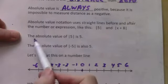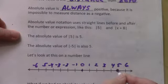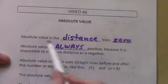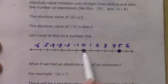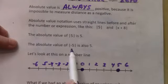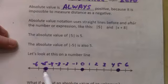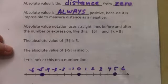Let's look at what this first one is telling us. What is the absolute value of 5? Well, let's find 5 on the number line. The absolute value is the distance from 0 — how far away is 5 from 0? It's 5 places away. Now let's look at the absolute value of negative 5. Negative 5 is also 5 places away from 0. So the absolute value of negative 5 is also 5.